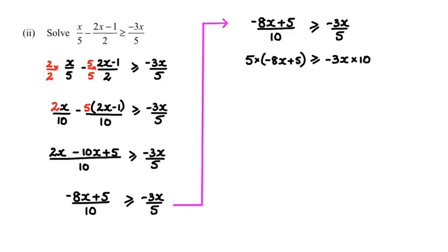Expanding the left-hand side, I get -40x+25 is greater than or equal to -30x, because -3x times 10 is -30x.